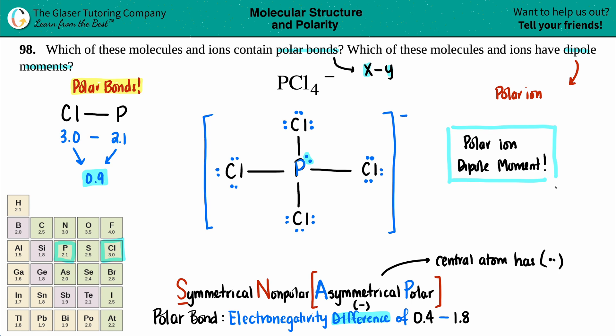So we have answered the question: PCl4 minus has polar bonds and has a dipole moment. I hope this helped. Check out the channel — we have physics and math videos too. Keep studying hard, and I'll talk to you in later lessons. Thanks so much for your support and for being part of the community!